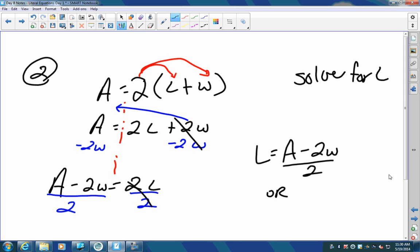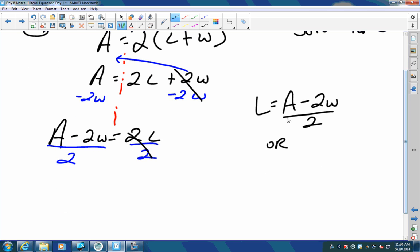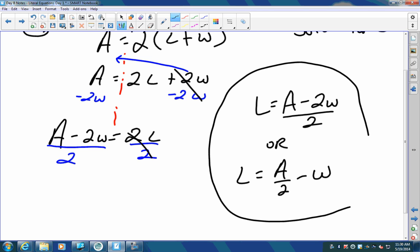Or, you could have it written, you could have divided it up and put L equals A divided by two minus, and then the twos on the W eliminate, and so it would just be one W. Either way, you could have written this and it would be correct.